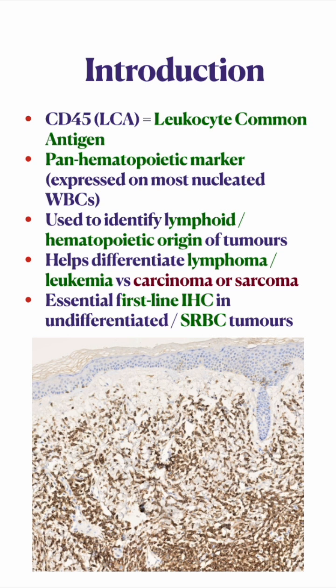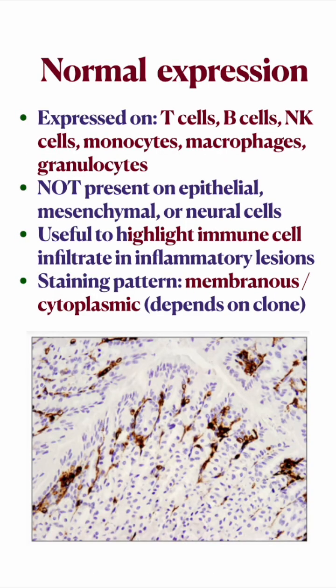CD45 is used to identify the lymphoid or hematopoietic origin of tumors, and hence it helps us differentiate between lymphoma or leukemia versus carcinoma or sarcoma. It is the first-line IHC marker for undifferentiated or small round cell tumors.